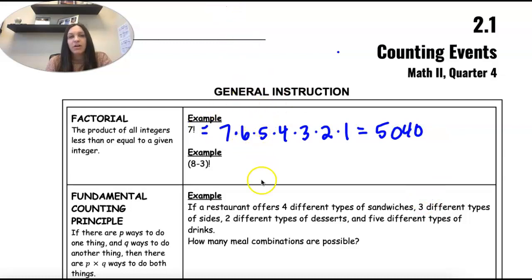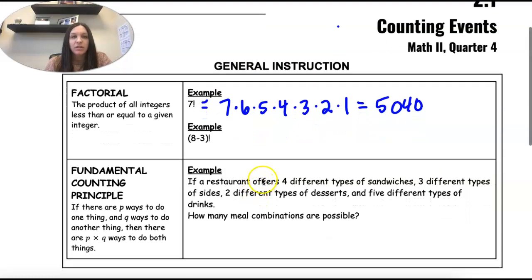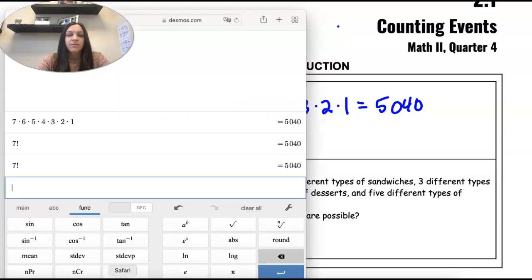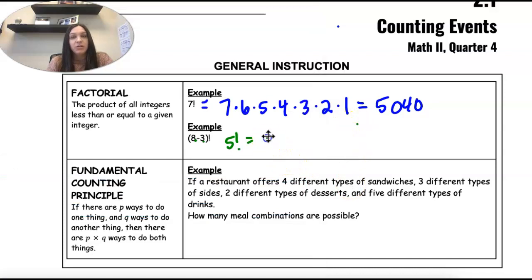And then factorials work just like our other equations. When we're simplifying, you follow order of operations. So I would do 8 minus 3 first, and then take the factorial of 5. So 5 factorial is 120. 5 times 4 times 3 times 2 times 1.